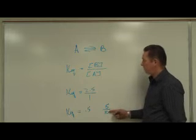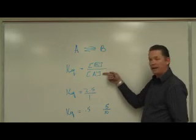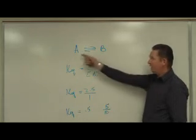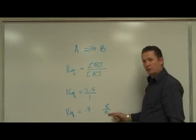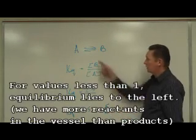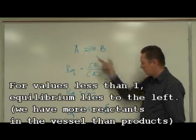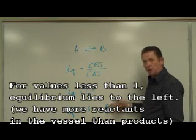Now in this instance, I have twice the concentration of A that I have B. A is the reactant. So in this instance then, equilibrium lies to the left because my number is less than 1.